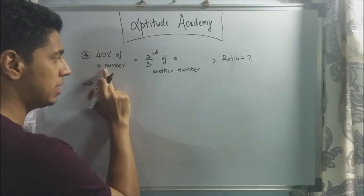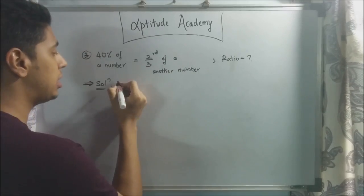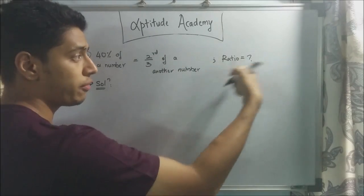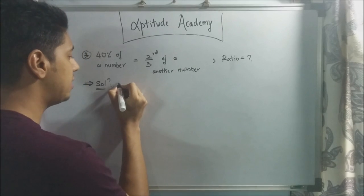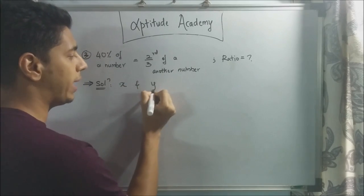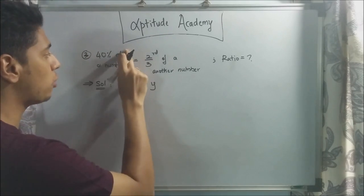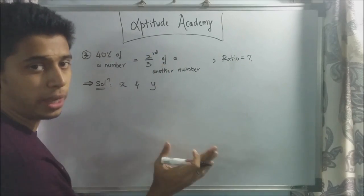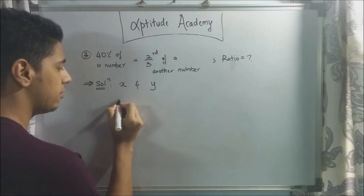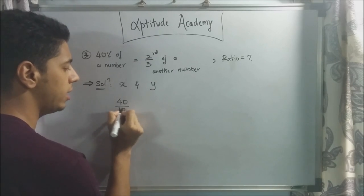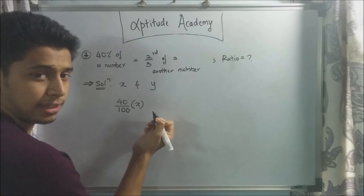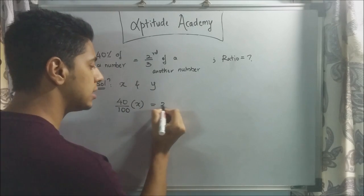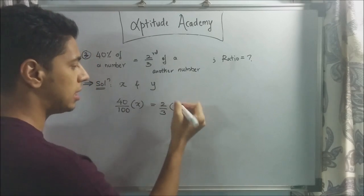For the third sum what they've said is that 40% of a number is equal to two-thirds of another number. This is the first number and this is the second number. You need to know that there are two numbers out of which you have to find the ratio of both of them. So let the numbers be x and y. What they're saying is, 40% of x is equal to two-thirds of y. What is the ratio of x and y? We'll rewrite this. So 40% is 40/100 of x is equal to 2/3 of the number y.